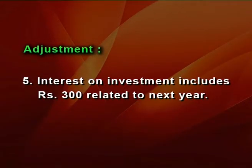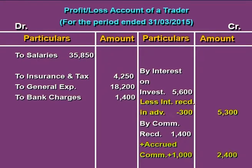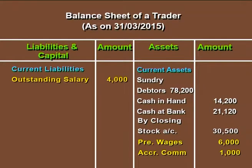Next: interest on investment includes Rs 300 related to next year. This is advance income — you have received Rs 300 in advance. Advance incomes are to be deducted from the concerned incomes. In the profit or loss account, interest on investment of Rs 5,600 in the inner column has been reduced by Rs 300 received in advance. For the second effect, as you have received this income in advance it is a liability, so Rs 300 has been reported as advance interest under current liabilities in the balance sheet.